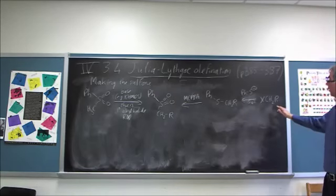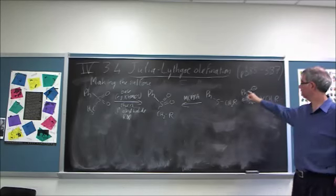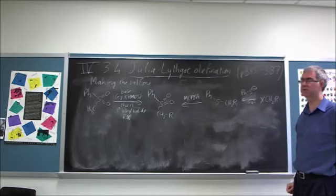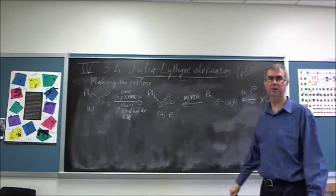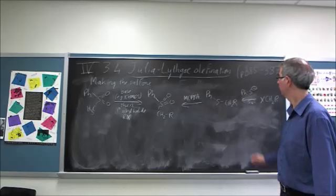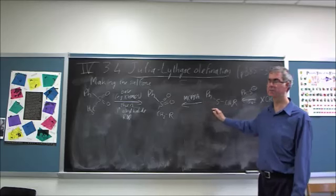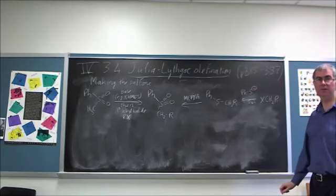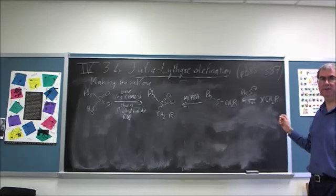We can also start with a primary alkyl halide with one more carbon in it and do an SN2 reaction. This is just like Williamson ether synthesis, except we have a sulfur instead of an oxygen. We form a thioether or a sulfide, which can be oxidized to the sulfone with something like MCPBA. And in fact, my students in my research group do a lot of these MCPBA oxidations quite regularly. It can be done with other things. Sometimes hydrogen peroxide works as well.